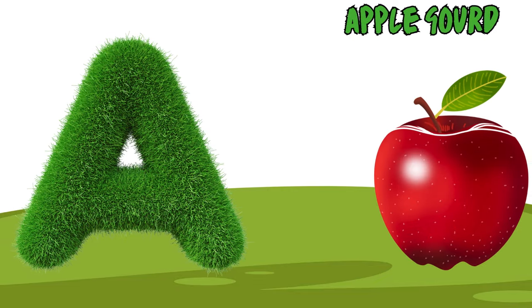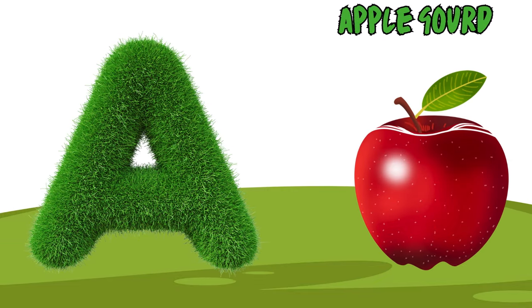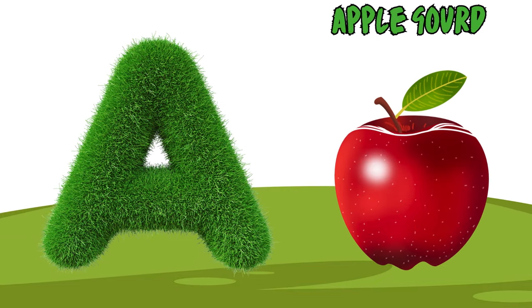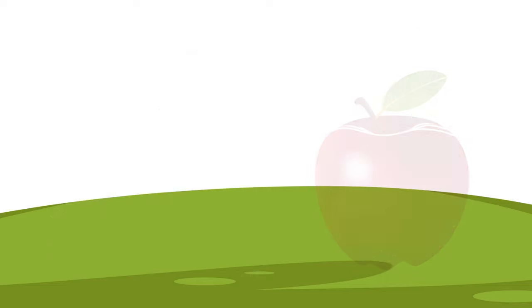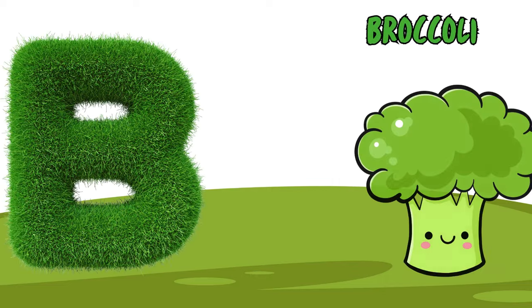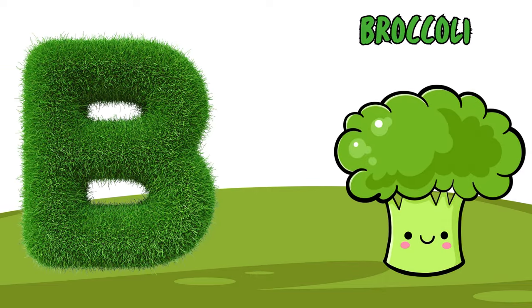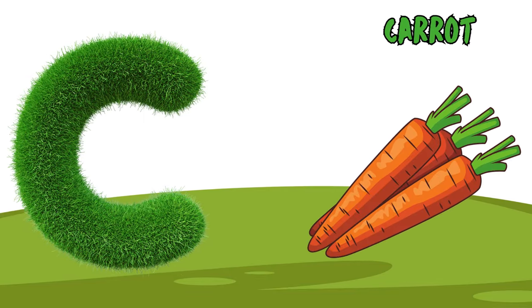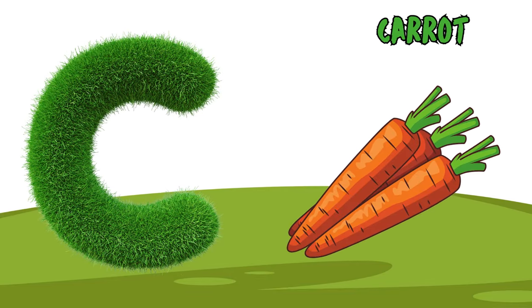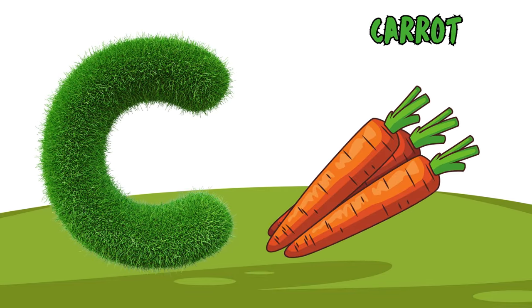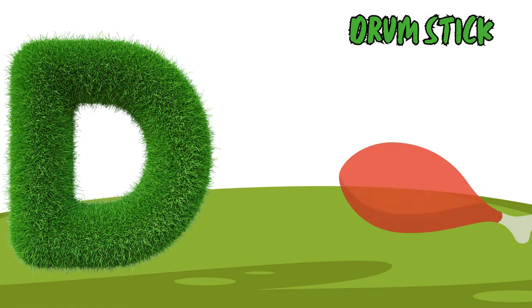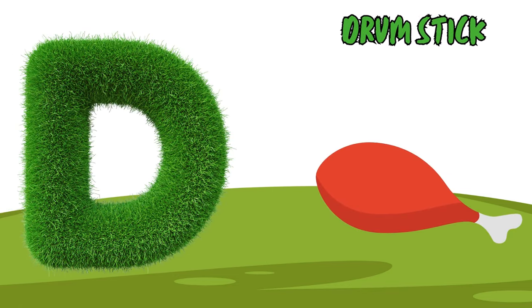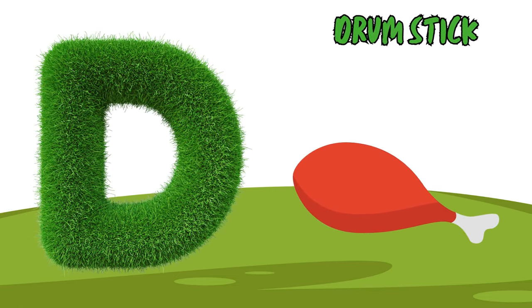A is for apple gourd, apple gourd. B is for broccoli, broccoli. C is for carrot, carrot. D is for drumstick, drumstick.